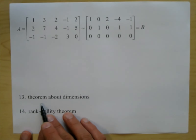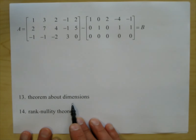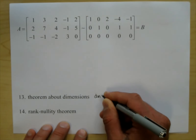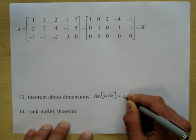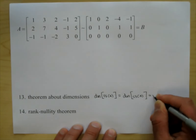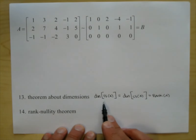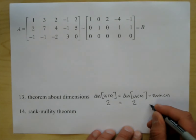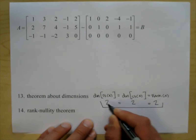Problem 13 asks us to verify the theorem about dimensions. The dimension of row space of A equals the dimension of col space of A equals the rank of A. We found dimension of row space equals 2, dimension of col space equals 2, and rank equals 2. So 2 equals 2 equals 2.